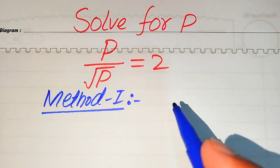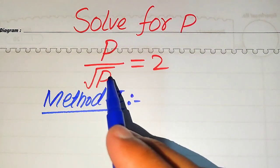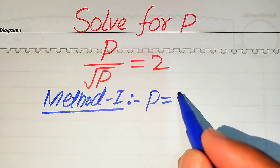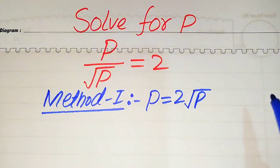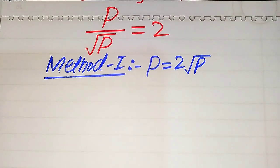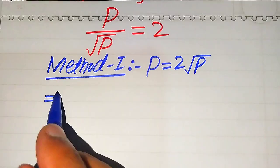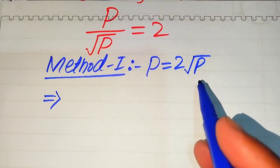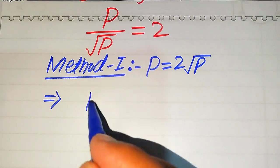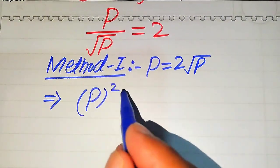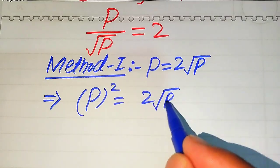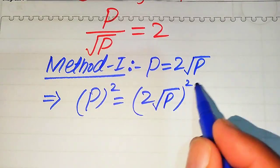In the first method, we need to move the square root of p to the right hand side, and it becomes p equals 2 times square root of p. To remove the square root of p on the right hand side, we will take squaring on both sides, so it will be written as p squared equals 2 times square root of p, whole squared.